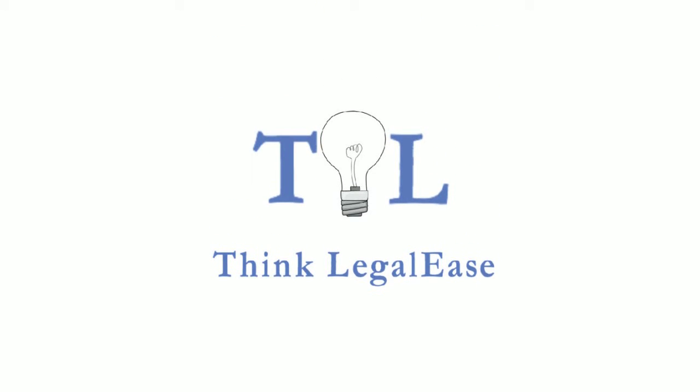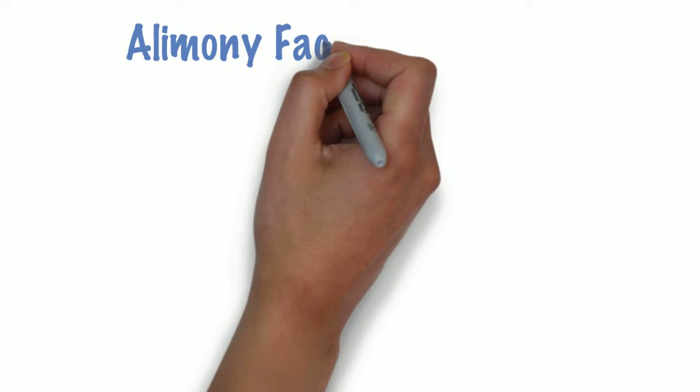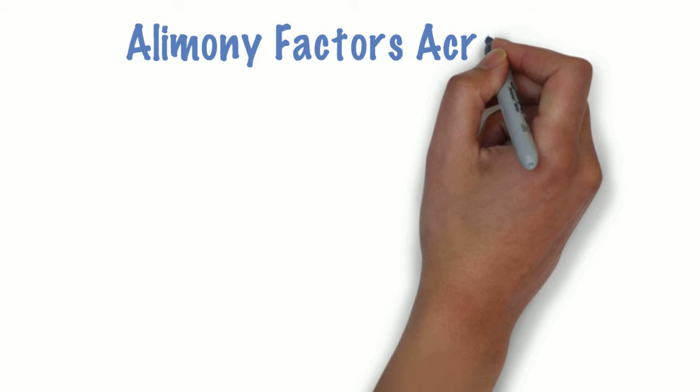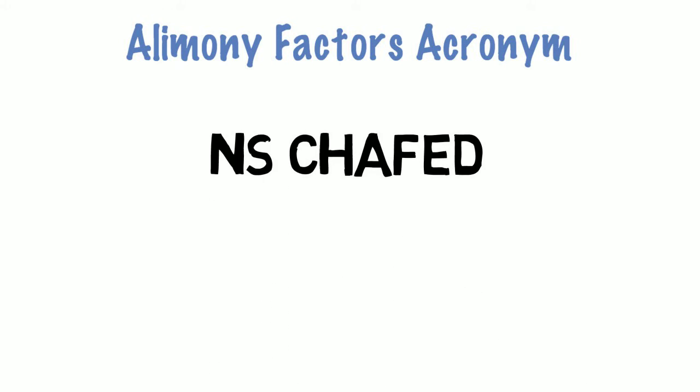Hi there. The easy way to remember the factors that go into the award of alimony is NS CHAFED, or if you would prefer a mnemonic, 'not so chafed.'